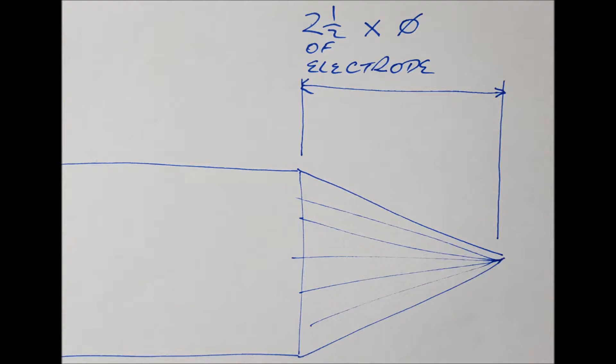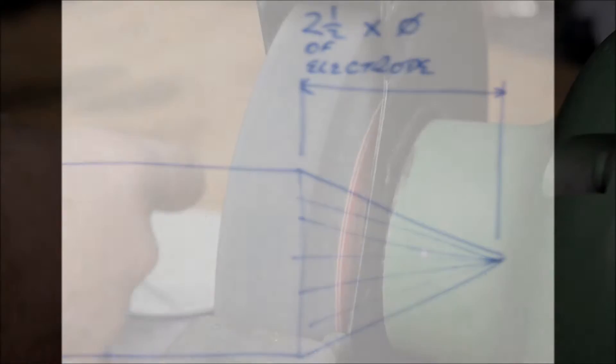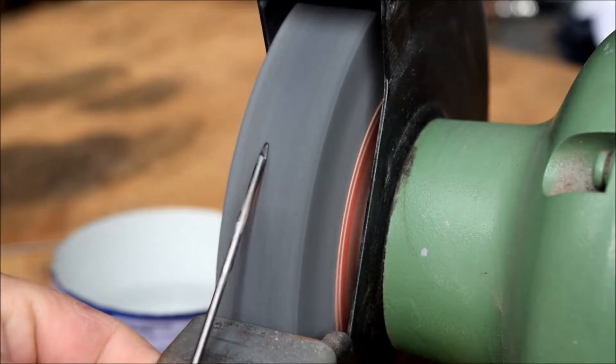When we prepare this tungsten we aim for the length of the point from the tip to the shoulder to be approximately 2.5 times the diameter of the electrode.